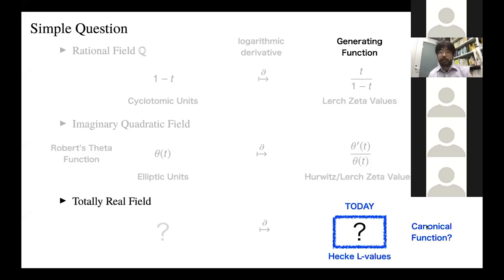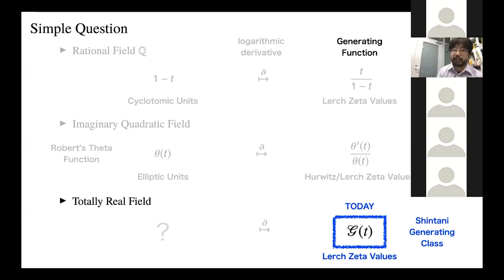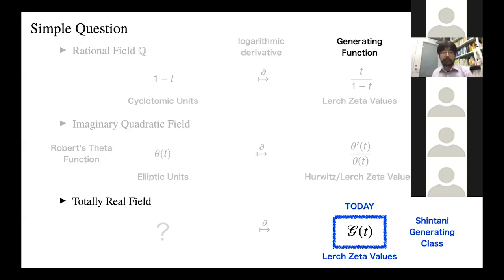So we have a very good theory in the rational field case and the imaginary quadratic field case. The question is: is there a canonical function that knows Hecke L-values? More precisely, it's Lerch's zeta values that we want. I want to talk about a very canonical class, which we call the Shintani generating class, constructed to generate these Lerch's zeta values. That is the main theme of today.